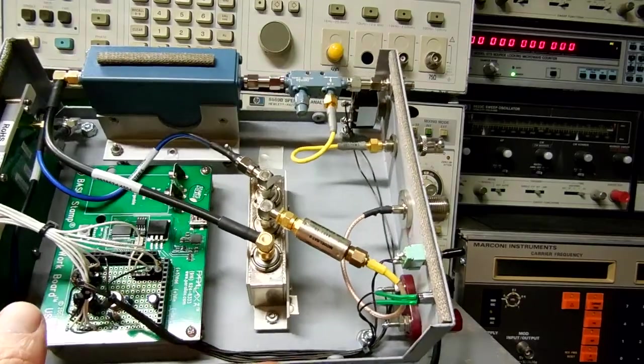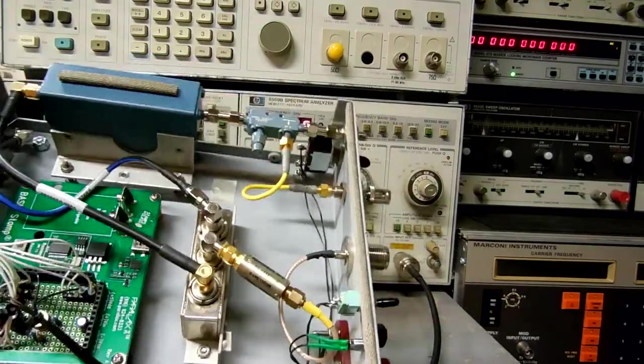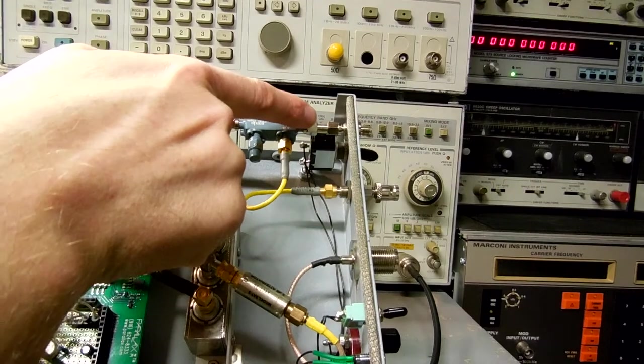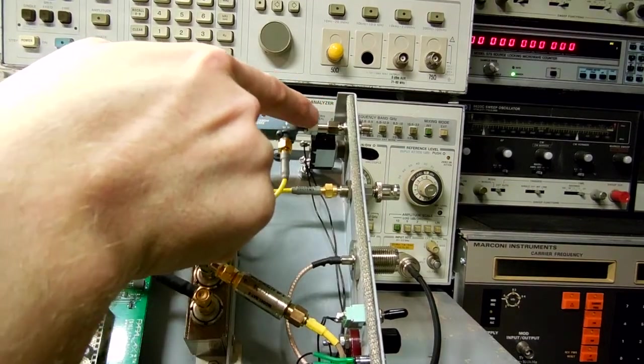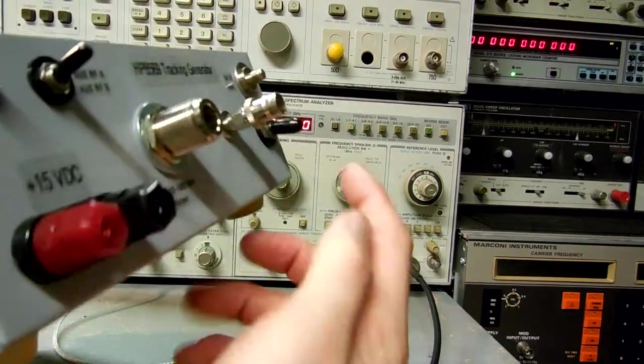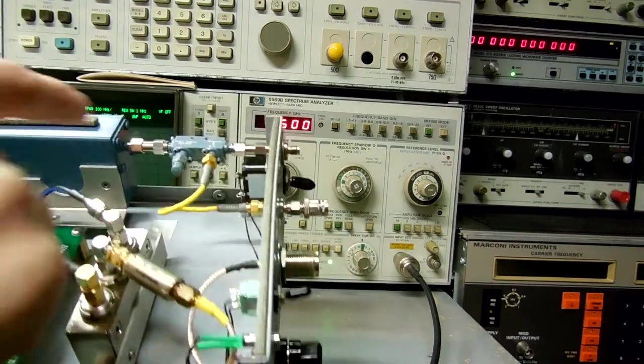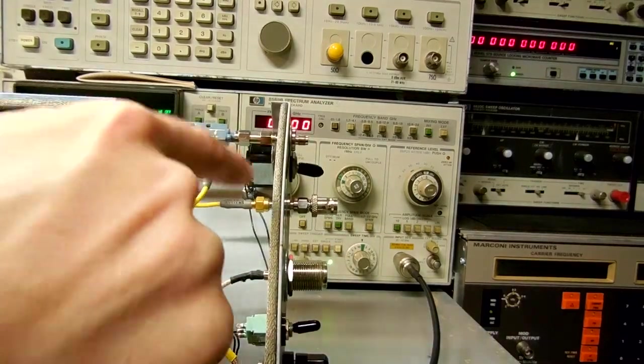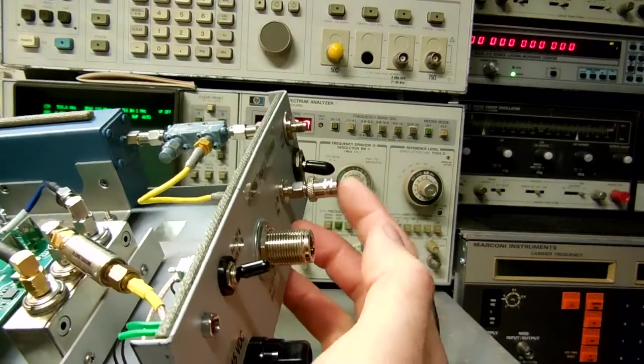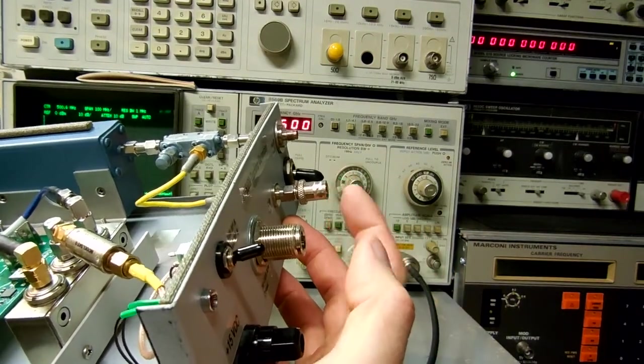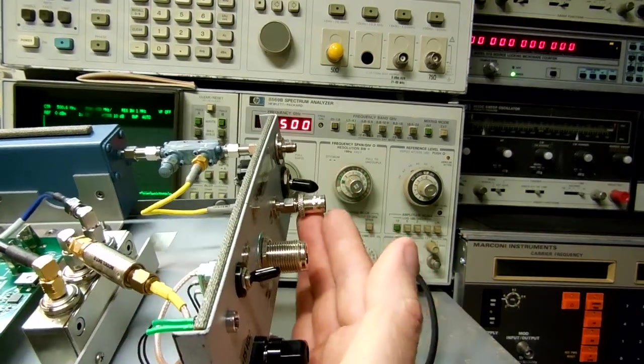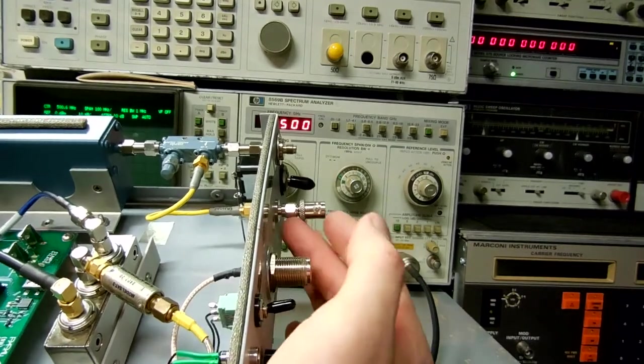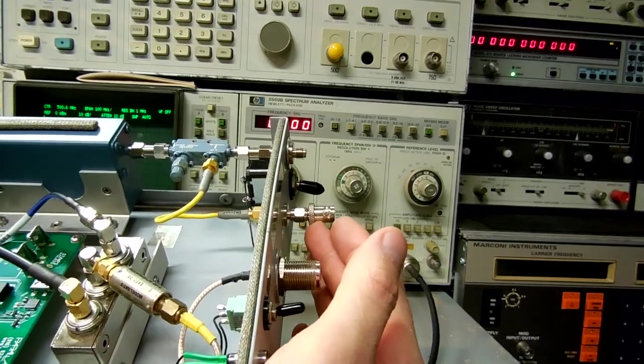Here's what the tracking generator looks like. The IF input from the Spectrum Analyzer comes into this SMA jack right here. I have a 6 dB directional coupler where I tap that off to another front panel SMA. This goes off to a frequency counter so we can measure the actual frequency of the local oscillator at that moment.